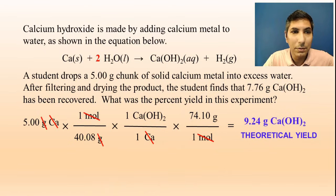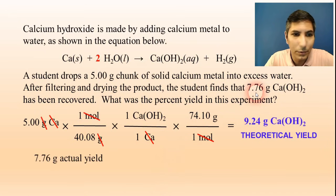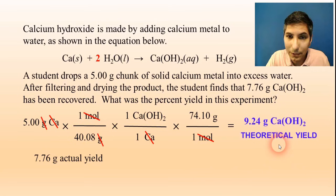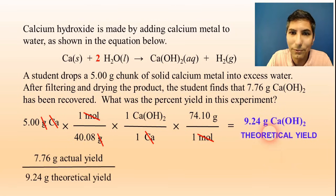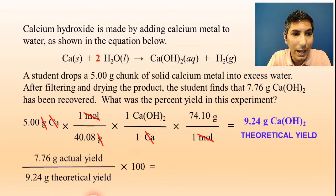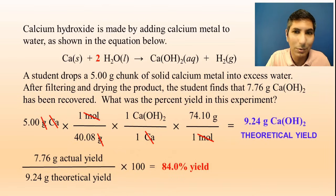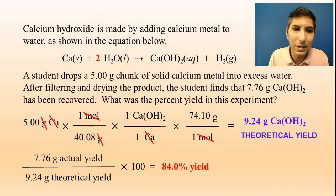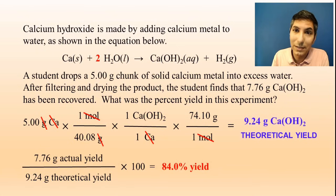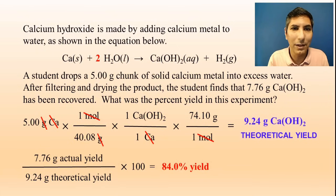The problem gave us an actual yield of 7.76 grams, and we just calculated a theoretical yield of 9.24 grams. Dividing those and multiplying by 100, the percent yield is 84.0%. There are several different ways these percent yield problems can be worded, and of course we had the limiting reactant problems in there as well.